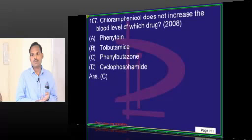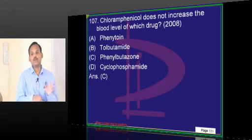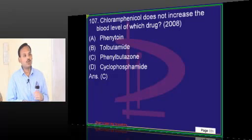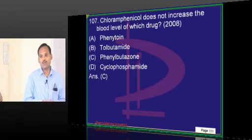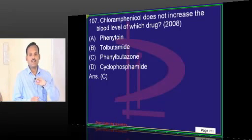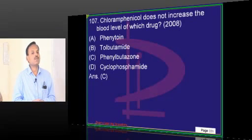Chloramphenicol can cause Gray-Baby syndrome. It can cause two types of bone marrow depression: one is idiosyncratic and the other is dose-related. Idiosyncratic can happen at any dose; dose-related will happen only at doses above 100 mg per kg body weight. The dose-related one is reversible when you stop therapy, but the idiosyncratic may or may not recover. People who have taken cumulatively high doses of chloramphenicol may be at risk of developing leukemias in the future.